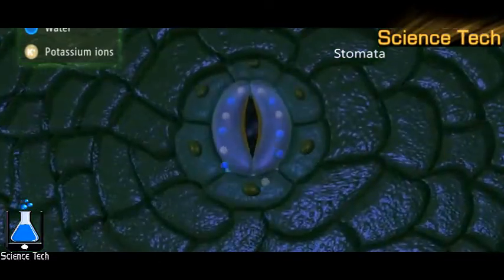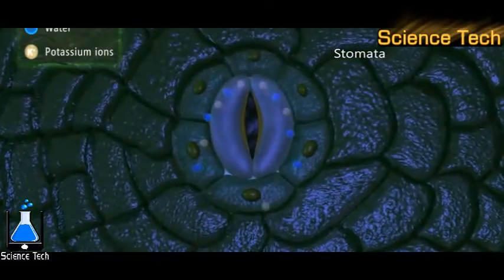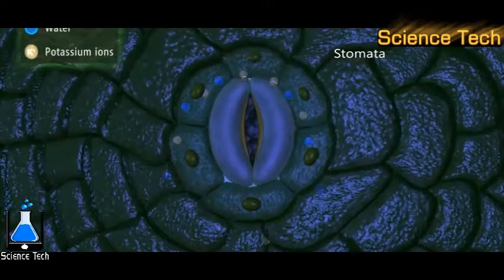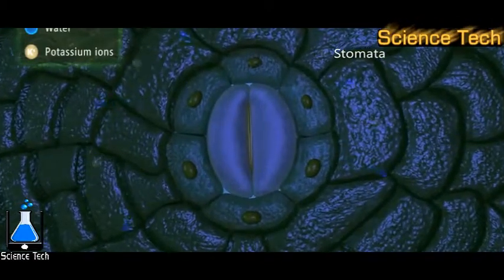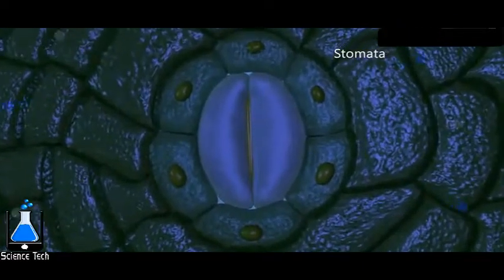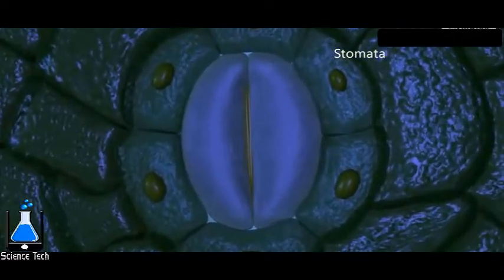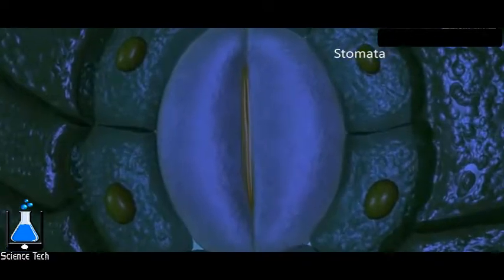During the night, the potassium ions and water molecules leave the guard cells. Thus, the turgidity decreases and the stoma closes. Stomata also act as main sites of gaseous exchange in plants.